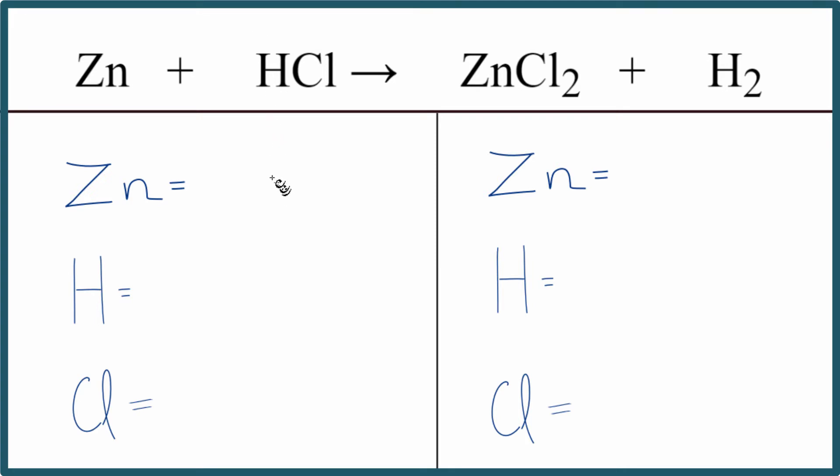So to balance the equation, we need to count the atoms up on each side. On the reactant side, we have one zinc, one hydrogen, and one chlorine atom.